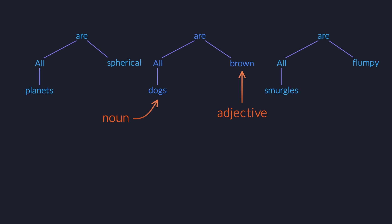All planets are spherical, all dogs are brown, and all smurgles are flumpy. These three sentences have the same structure, but they don't have the same meaning.